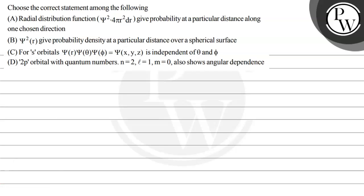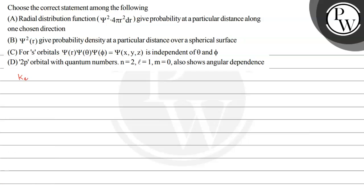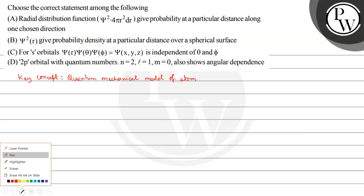Let's read this question. The question says choose the correct statement among the following. We have four statements and we have to see which statement is correct. The key concept here is the quantum mechanical model of atom, so we have to solve this question with the help of quantum mechanical model of an atom.